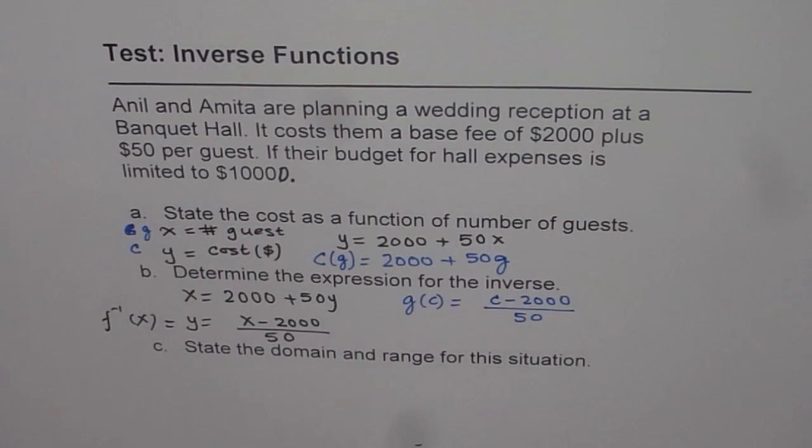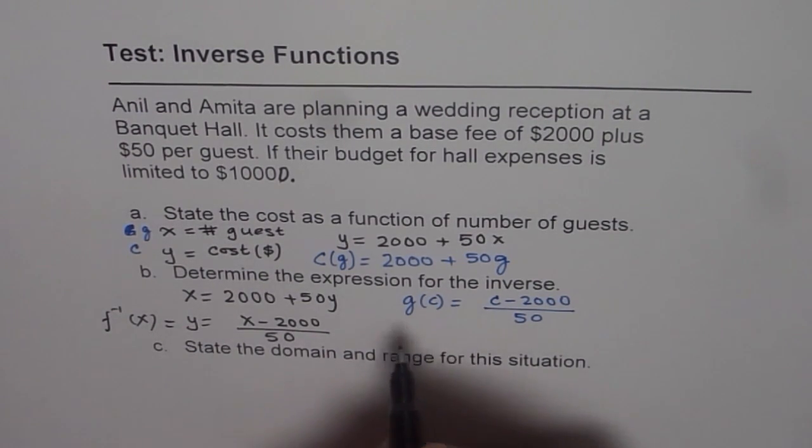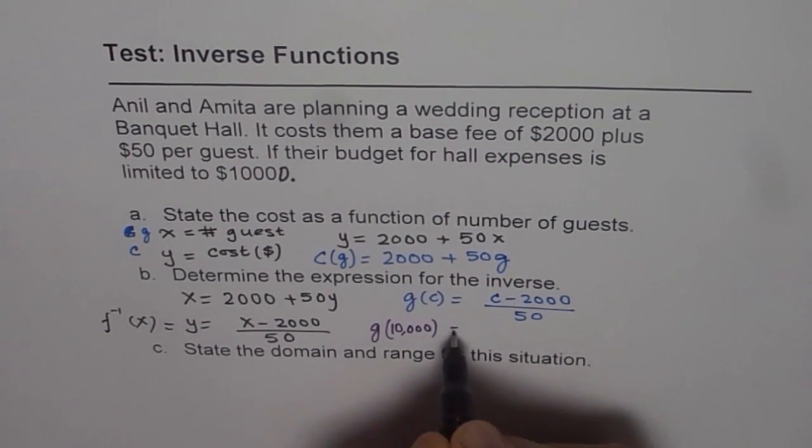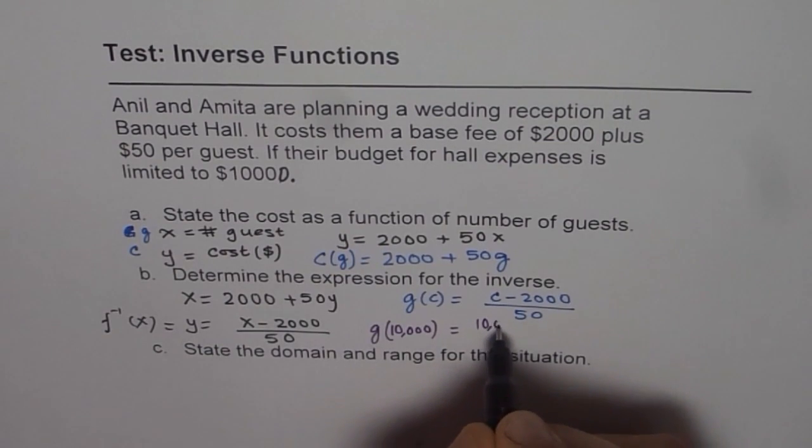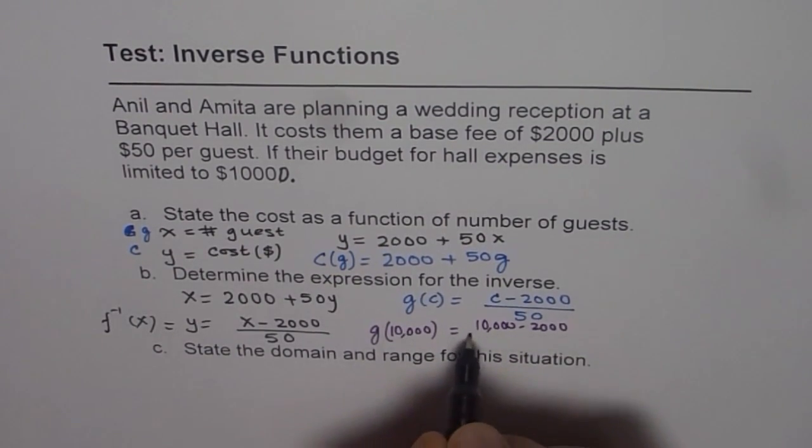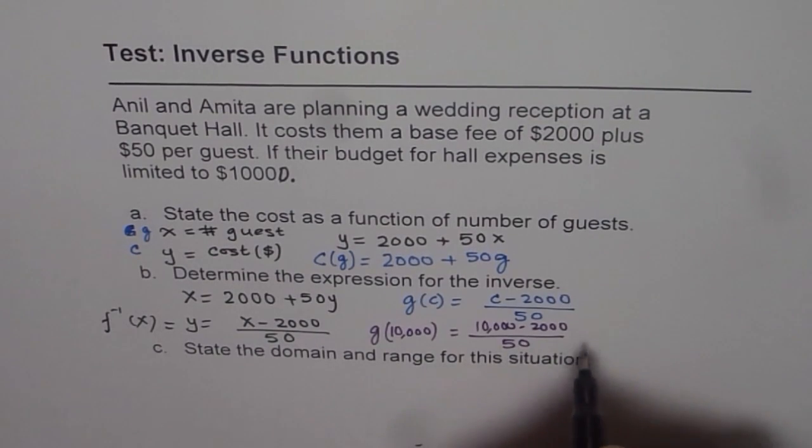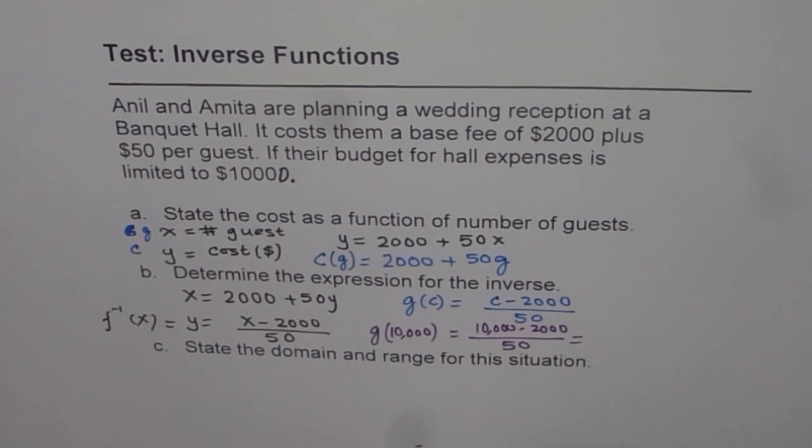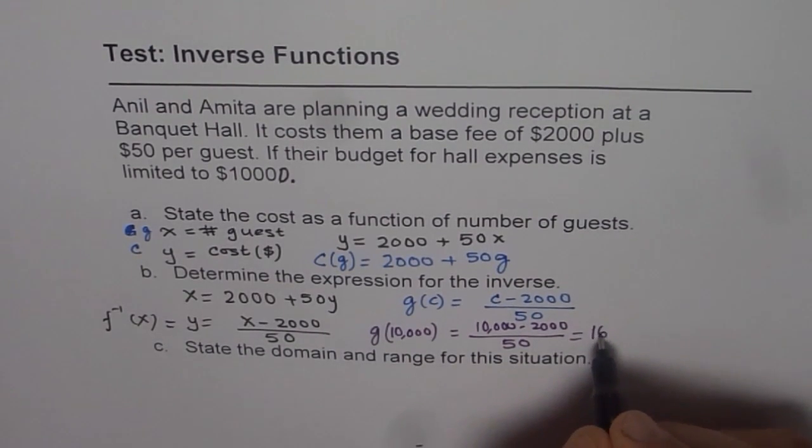From here, the number of guests for a limited budget of $10,000 is how much? Let's calculate. $10,000 equals $10,000 minus $2,000 divided by 50. That is $8,000 divided by 50. Let's use calculator to find the answer. We get $8,000 divided by 50, which equals $160.